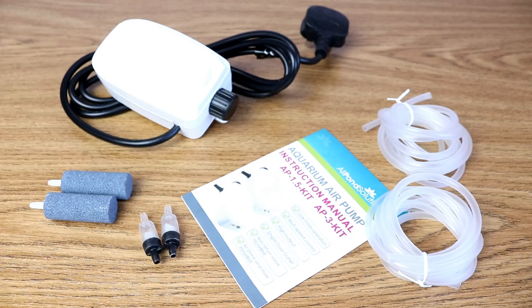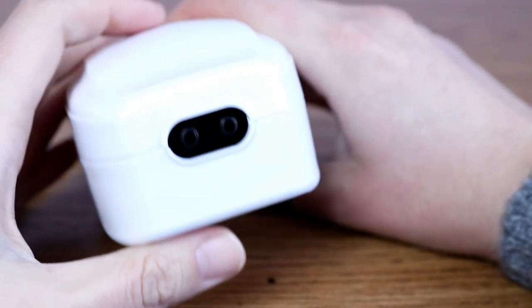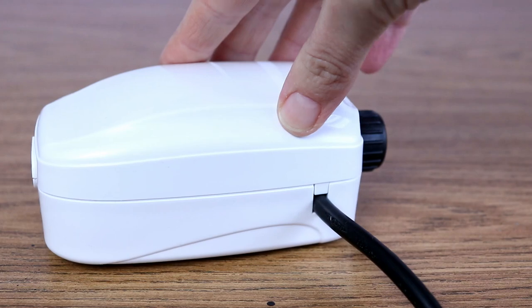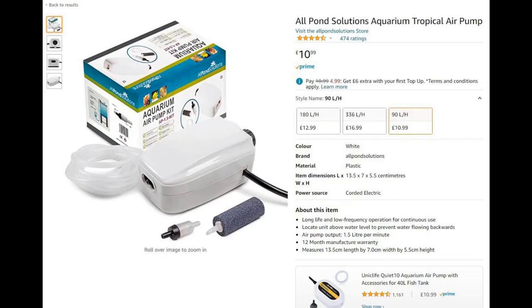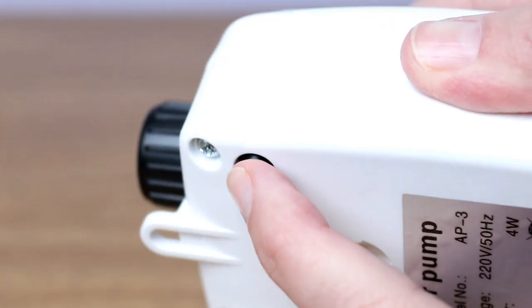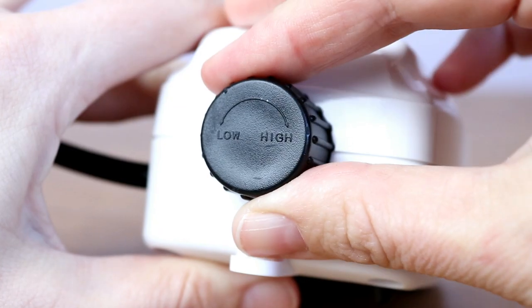This is the AP3 kit and as you can see it is a dual output, which is important for me because I have numerous tanks. But if you're looking for just one outlet, then they do have a smaller version of this pump called the AP1.5, which is much the same in terms of design, it just has one outlet rather than two.